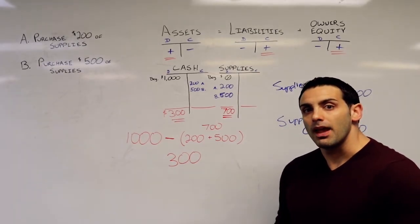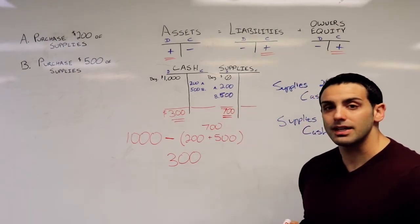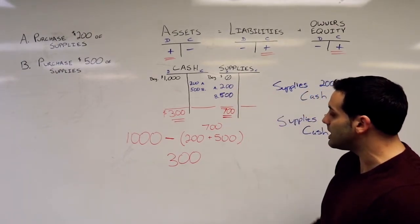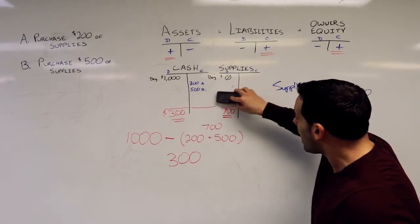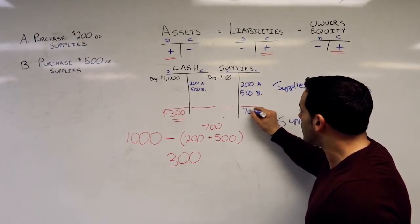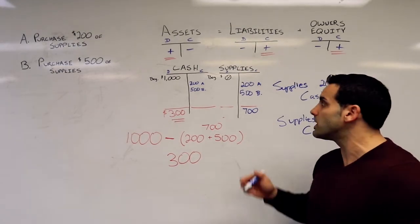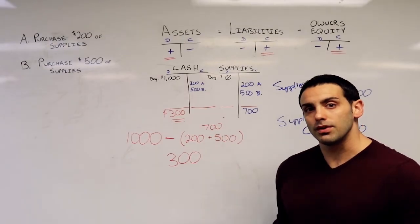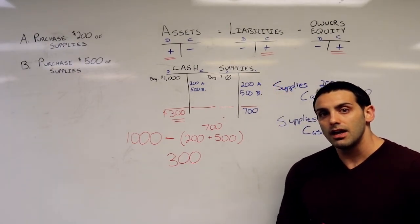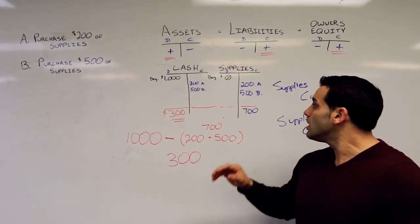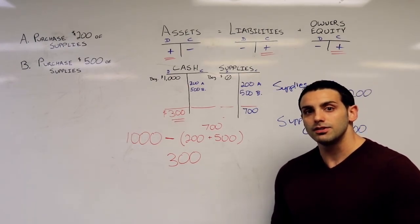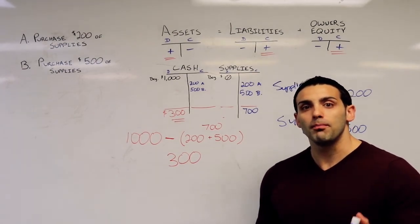That's how T-accounts can help us track activity and make sure we didn't make any mistakes. If I made a mistake and put supplies in my credit column, I would see a $700 credit balance, which doesn't make sense because we know our assets live in the debit world. That would flag a mistake, and I can figure out exactly which transactions I misclassified. T-accounts are a really good way to take a visual look at what you just did and double-check your work. I hope that helps — stay tuned for more lessons.